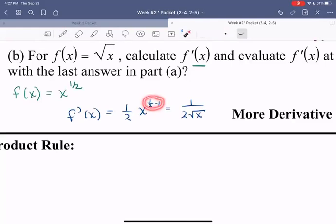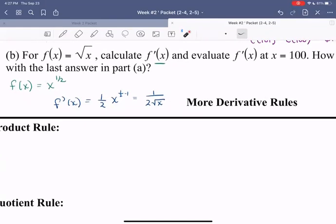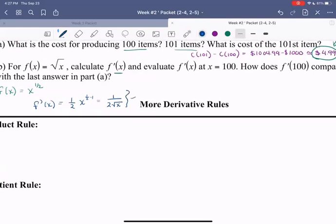So I move that x to the denominator so that negative exponent becomes positive. Positive one half exponent is the same thing as square root. All right, so here's where the fun begins. So now let's determine f prime of 100. So I'm just going to consult my derivative function that we already computed. So I would get one over two root 100. One over two root 100, well, root 100 is just 10.